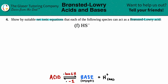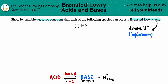Just as backstory, Brønsted and Lowry were two different scientists that came up with this idea of what acids are in an aqueous solution. What they noticed was that acids always donate protons, or H⁺. This is called hydronium. We will get into hydronium a lot this upcoming chapter, so hang tight for that. All we have to know for now is that a Brønsted-Lowry acid always donates the H⁺.